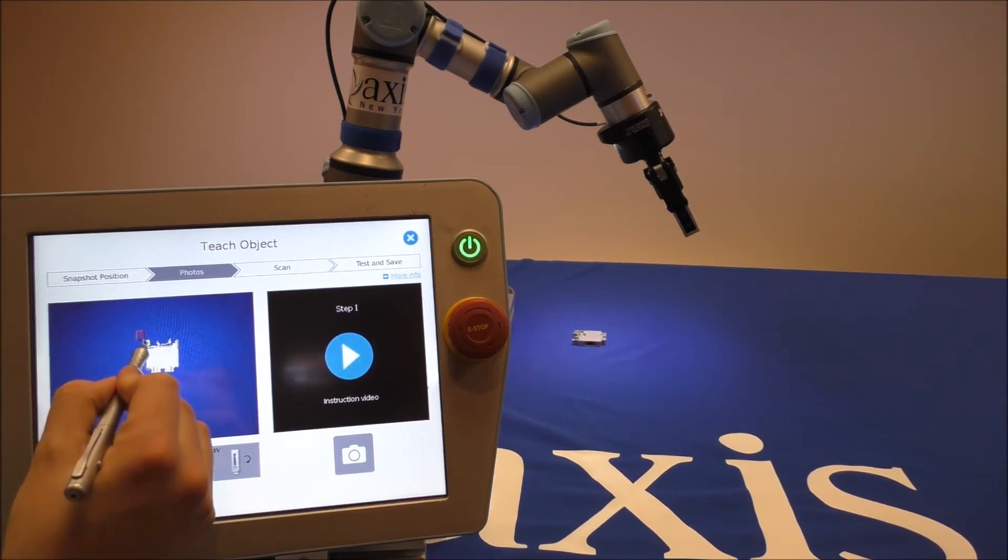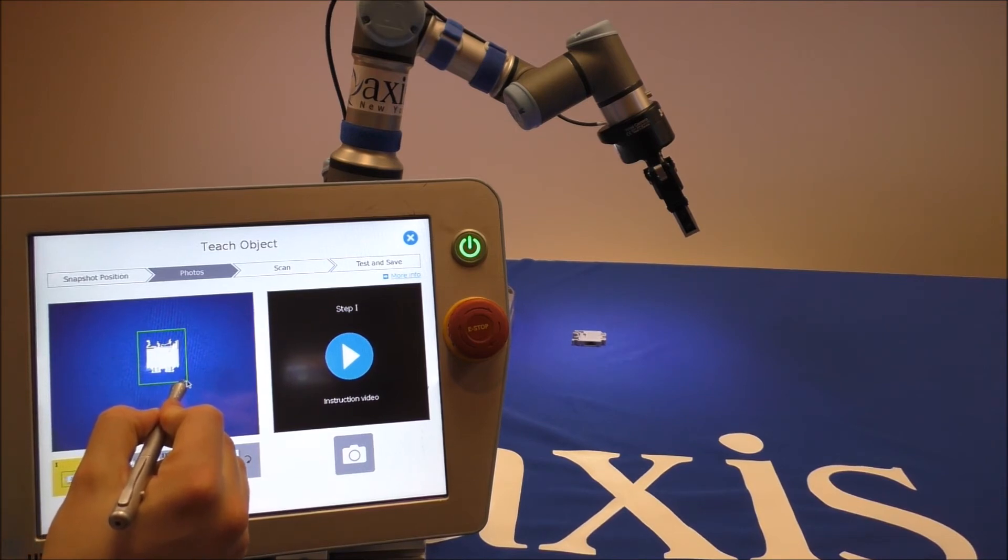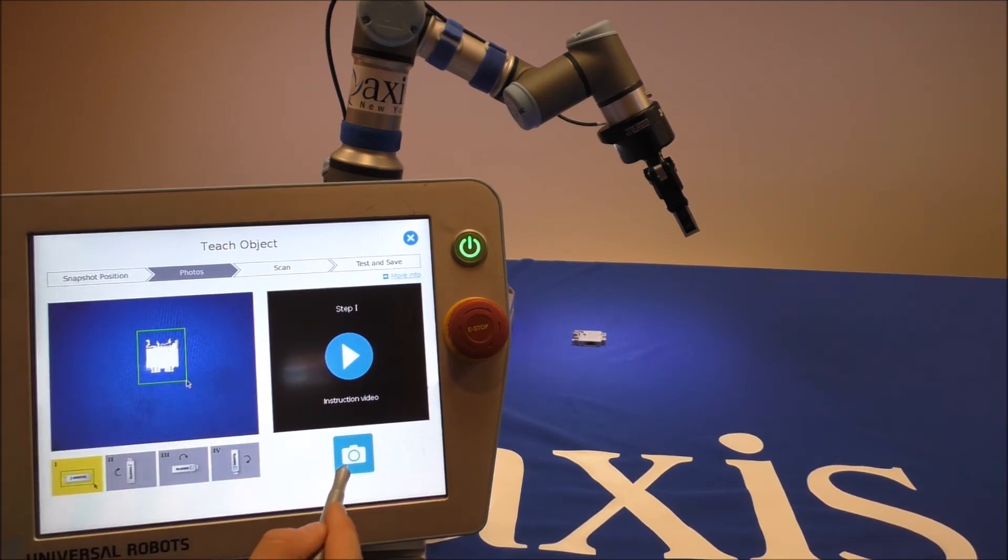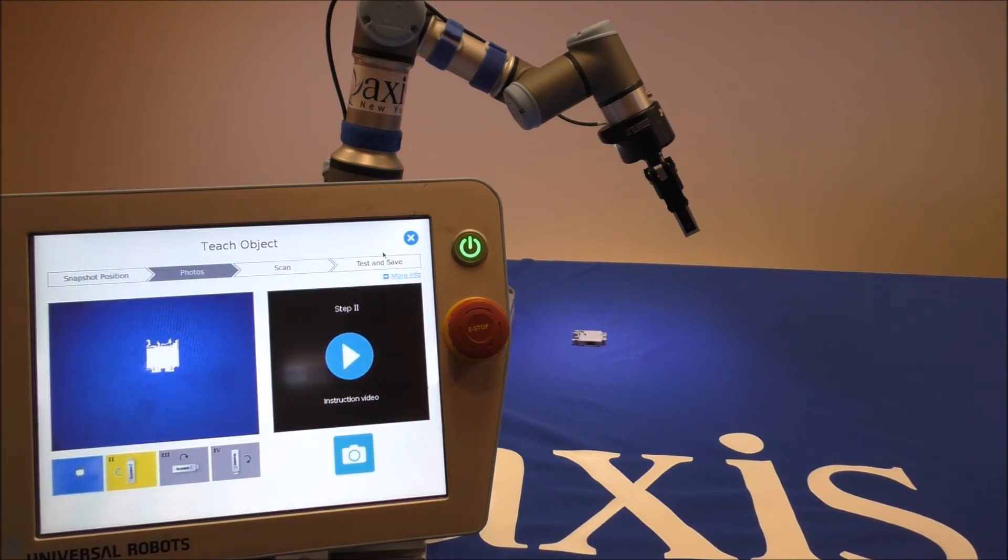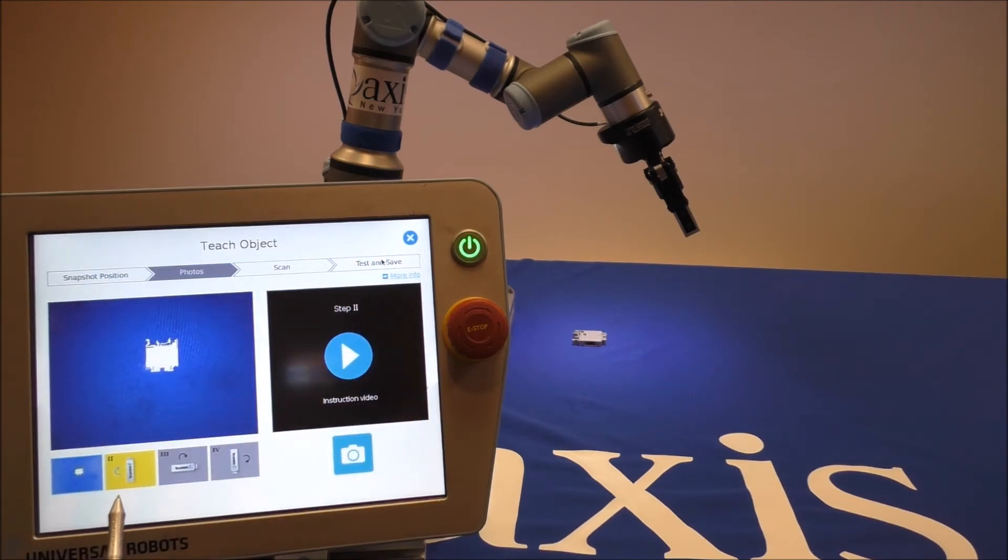We're going to start by drawing a box around the part of interest and we're going to select teach. We can click to view the object that was just found. You see we have a green outline around the part with good contrast against the background. Now we're going to move on to our second image where we rotate the part 90 degrees.